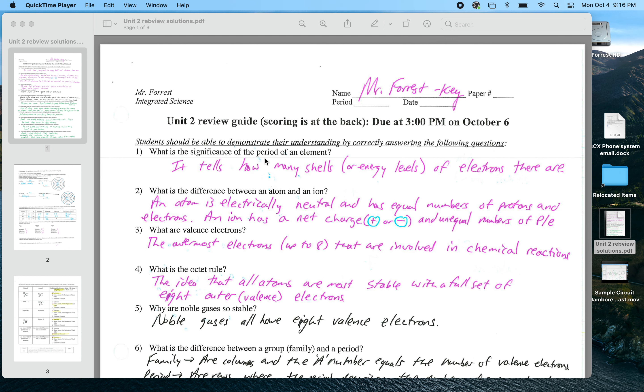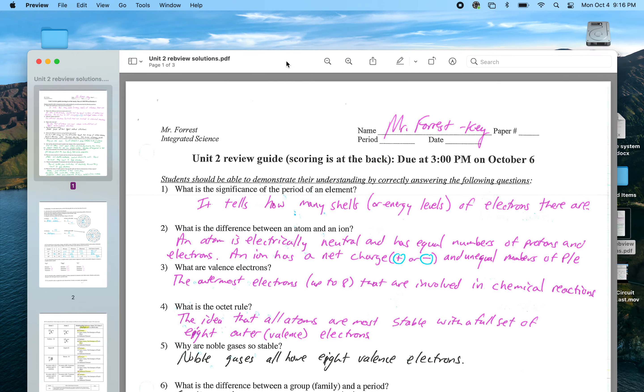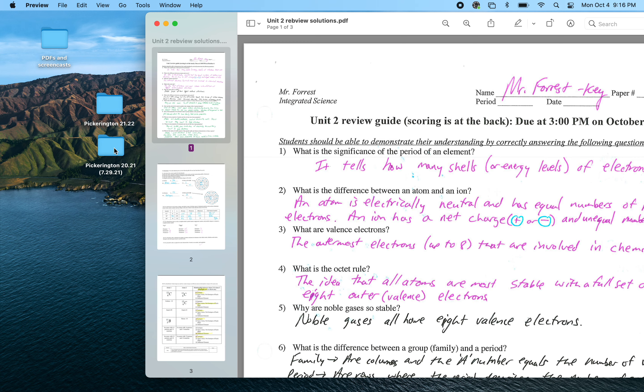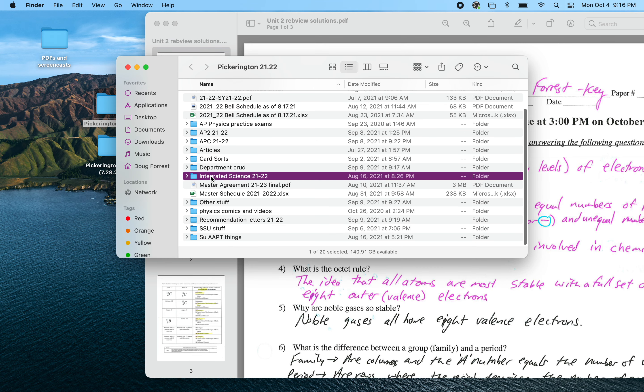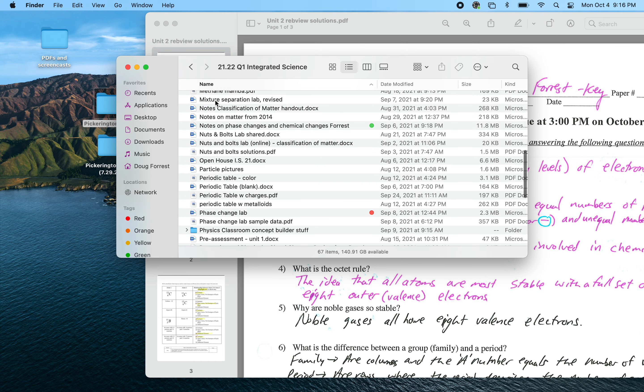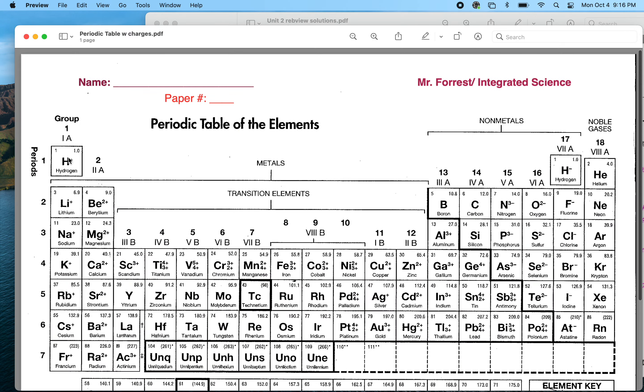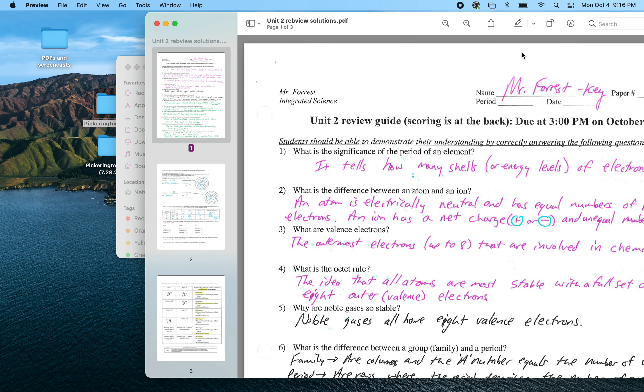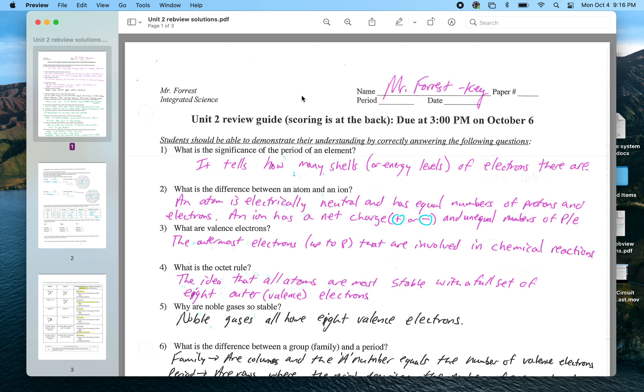The period of an element - the period is what's listed over here on this side of the periodic table. That is how many shells or energy levels of electrons there are. The difference between an atom and an ion: atoms are neutral, ions have charges. Valence electrons are the electrons in the outermost shell or the outermost energy level of an atom.